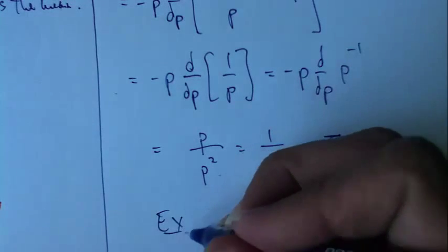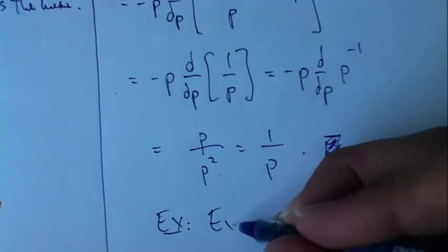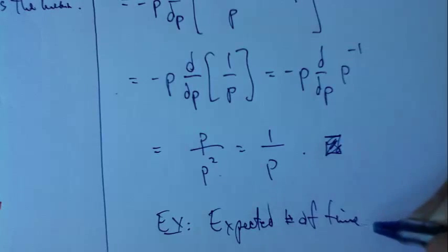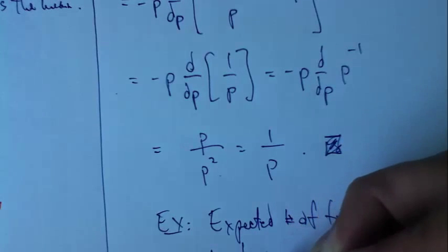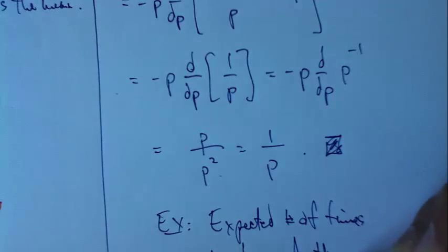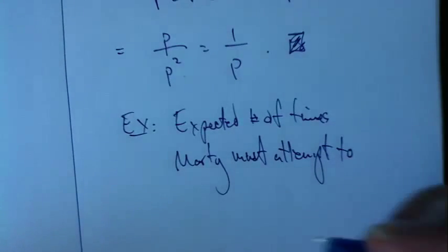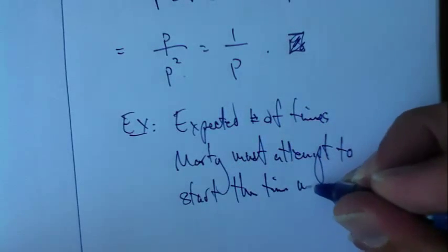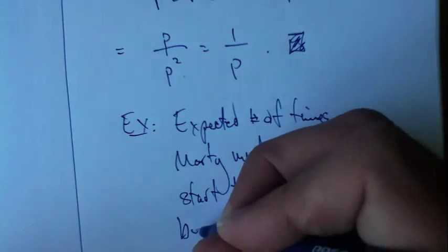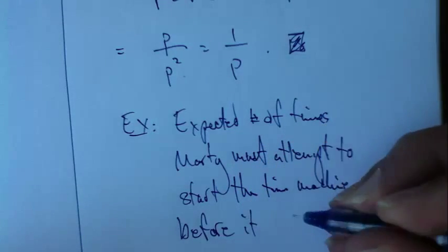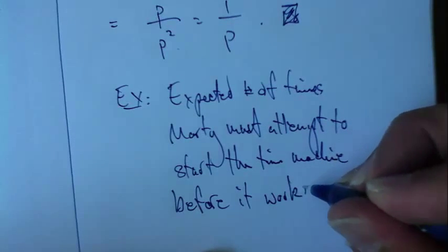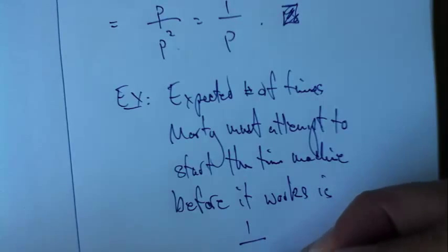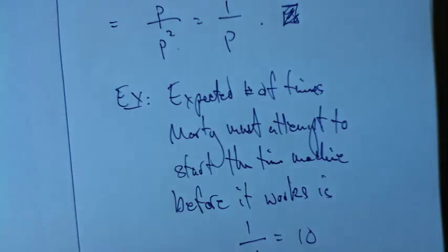So for example, the expected number of times Marty must attempt to start the time machine before it actually starts is just 1 over p, which was 0.1, which is 10. Very good.